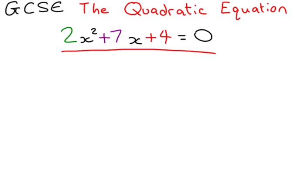Okay, so let's have a look how we can use the formula to solve this particular one that says 2x² plus 7x plus 4 equals 0. Now, the equals 0 is very important.